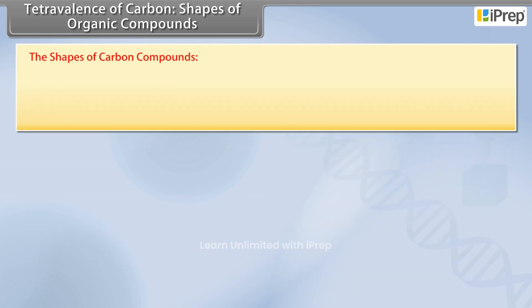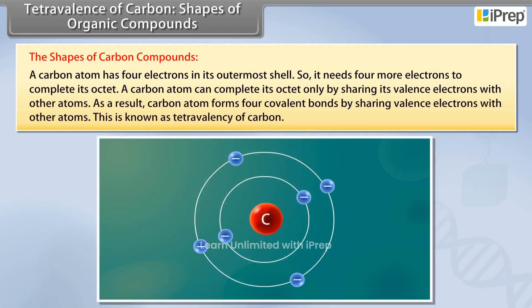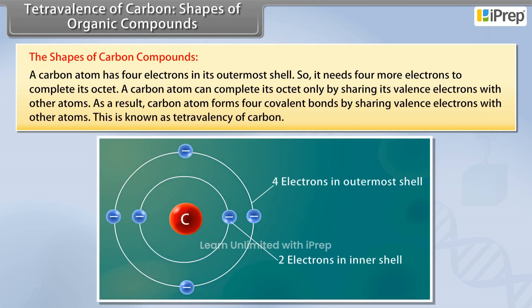The shapes of carbon compounds: A carbon atom has 4 electrons in its outermost shell, so it needs 4 more electrons to complete its octet.